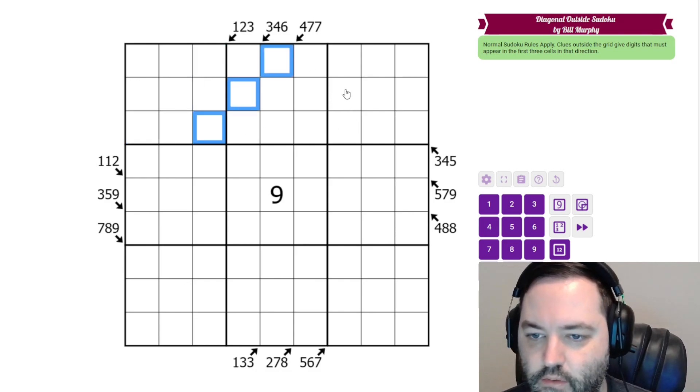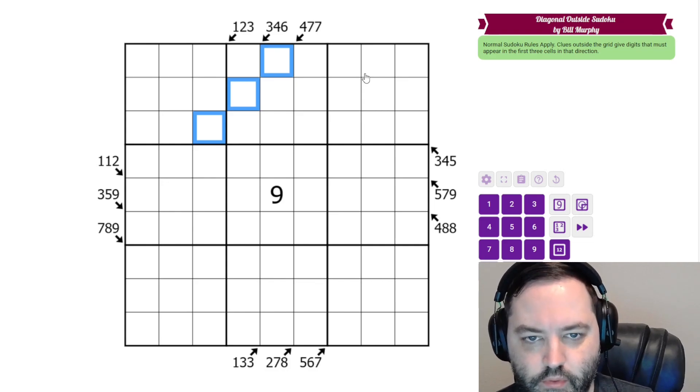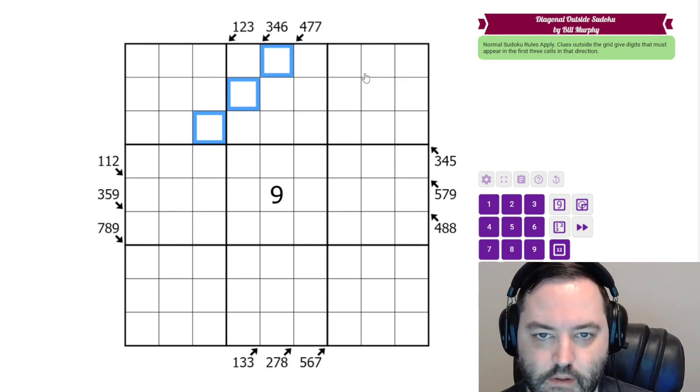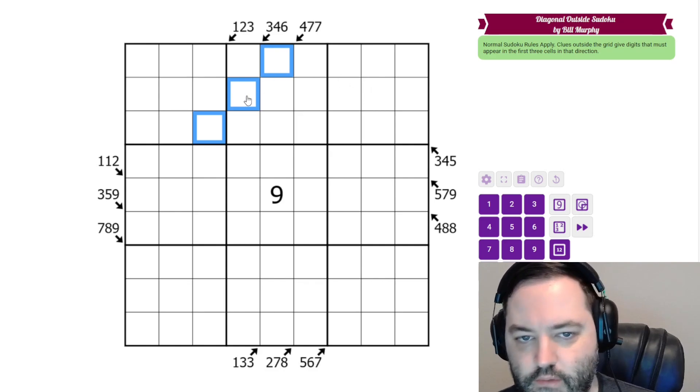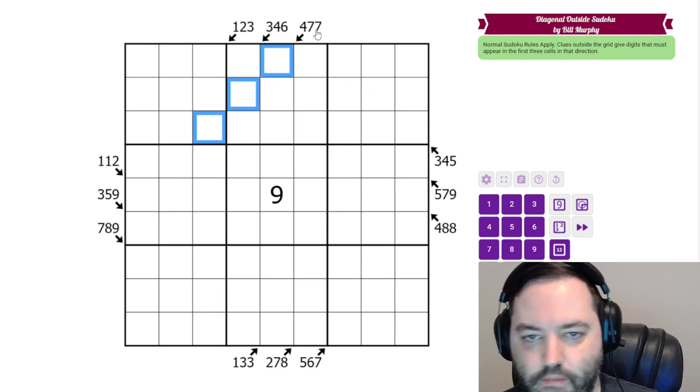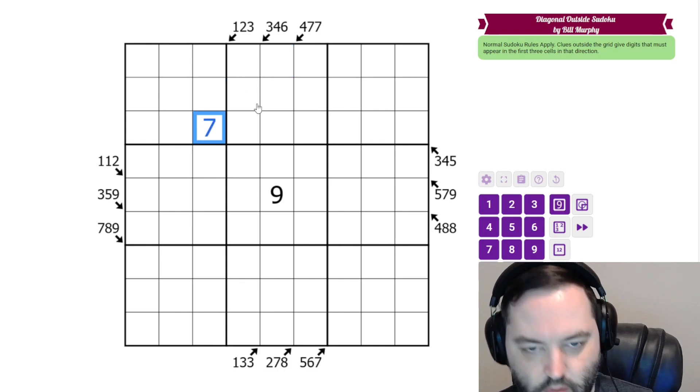So this must contain two 7s. Those are the rules, and we're actually going to start with the repeated digits here, because two of the cells in the first three are in the same box. And so if we need two 7s, one of them is going to have to go here.